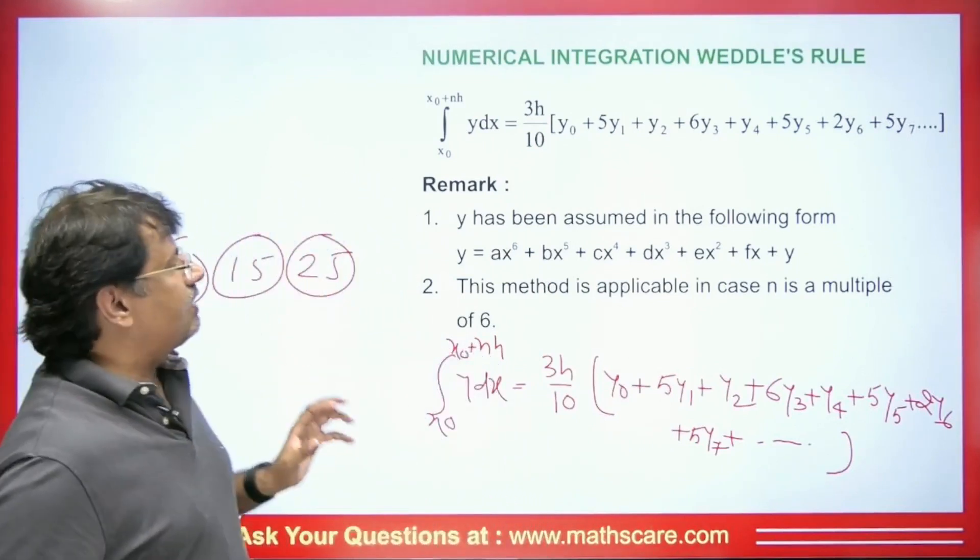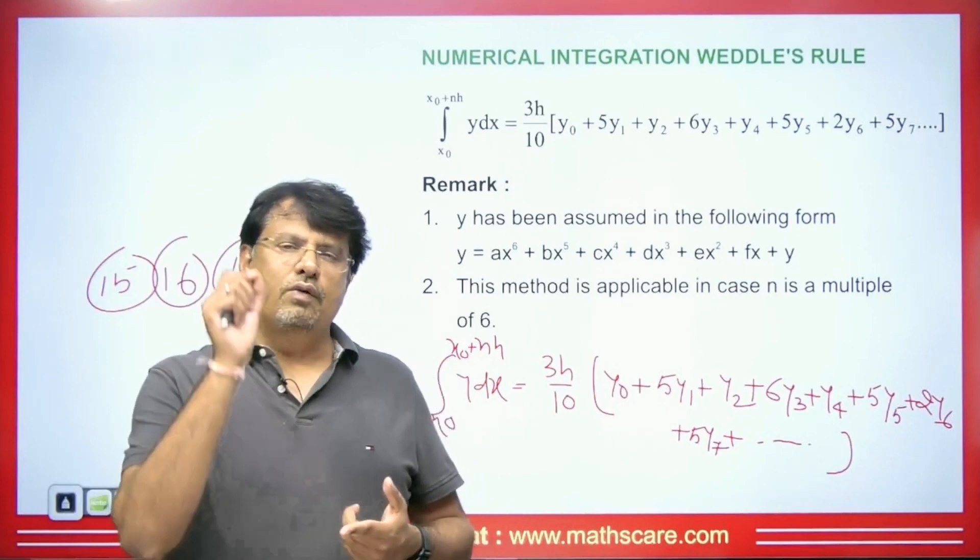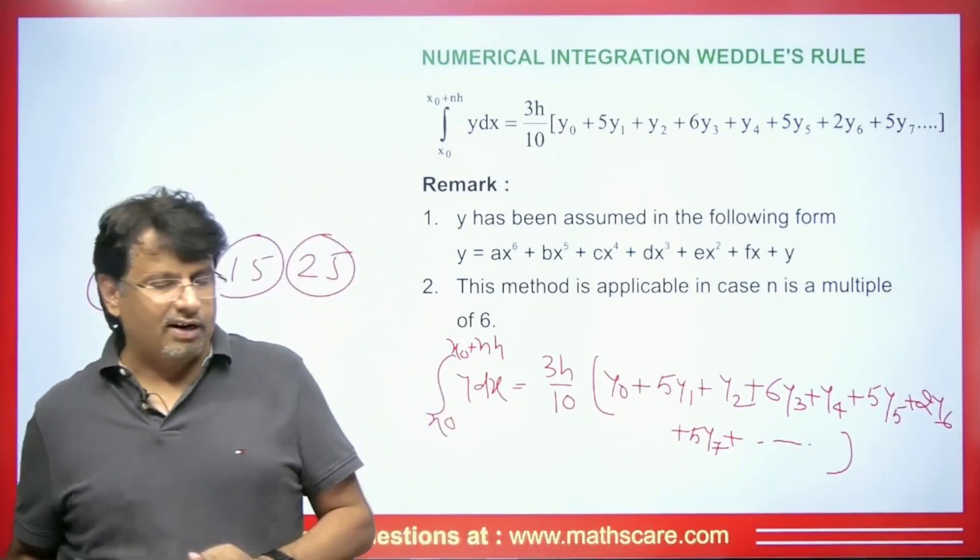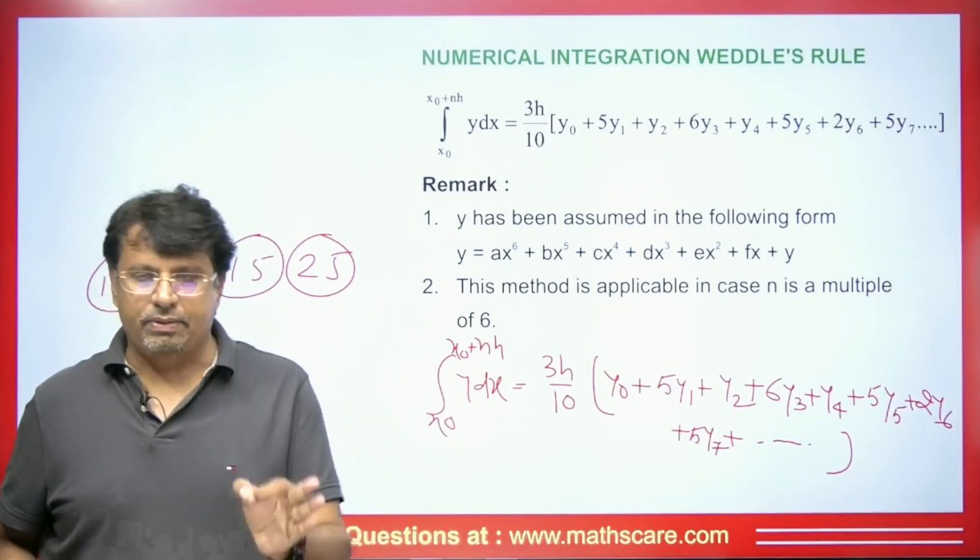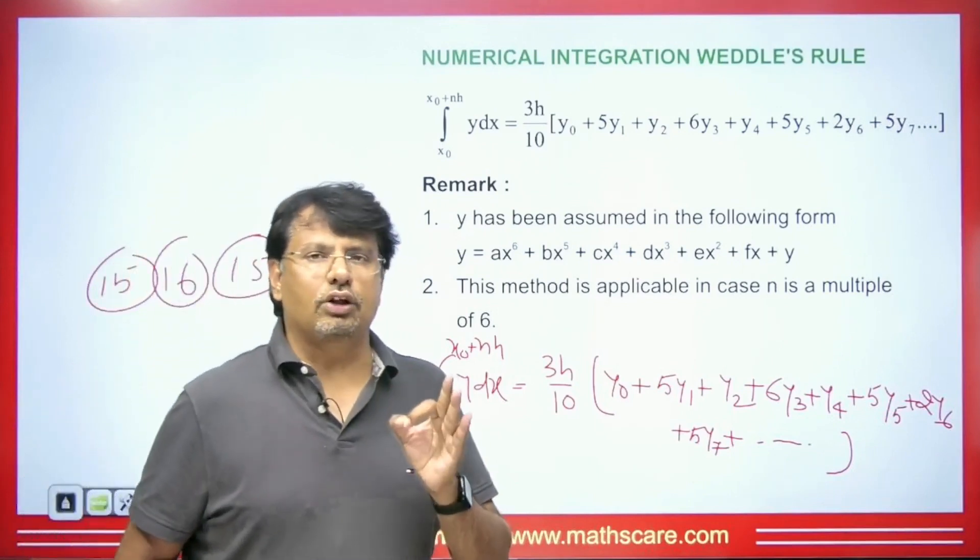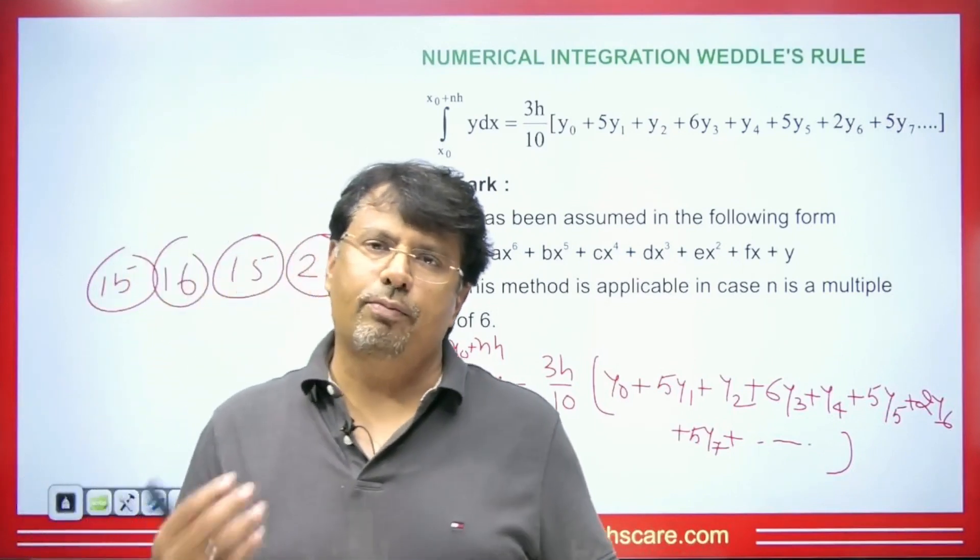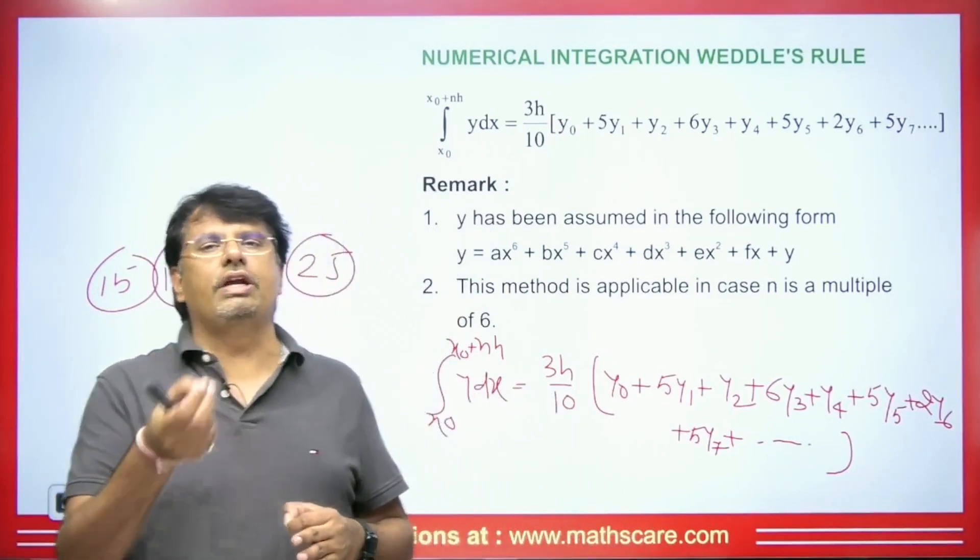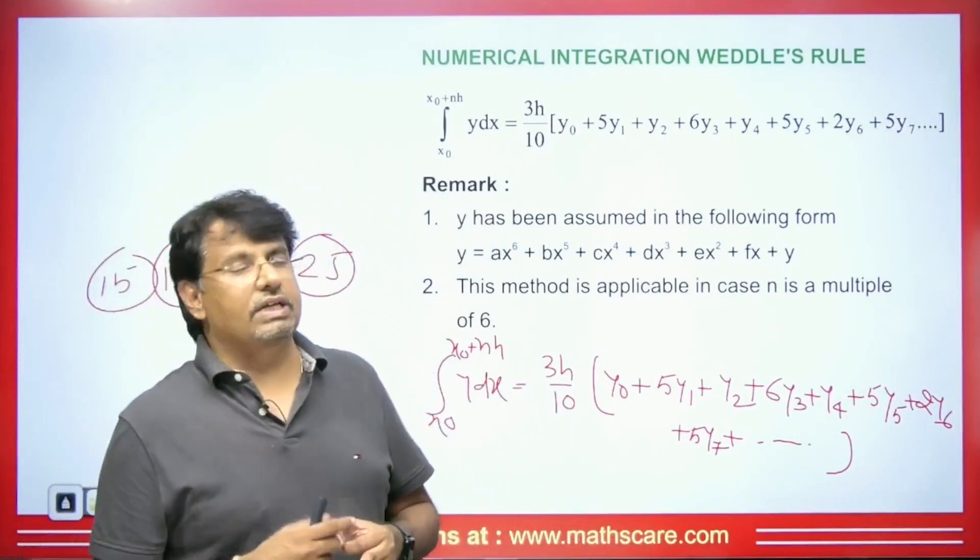I want to tell you one more thing: the Trapezoidal rule gives correct answer in the linear equation. It gives accurate answer. There is no error. Here, exact and approximate values are same. If you don't know about this, then you can see my previous videos that were on Trapezoidal rule. Similarly, the one-third, the quadratic equation, which is a two-degree polynomial, its answer comes correct.